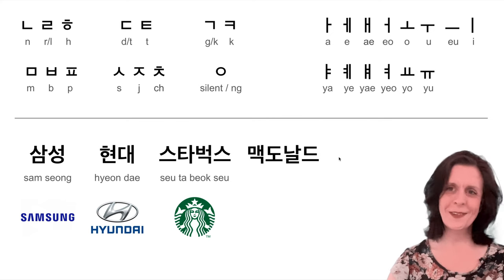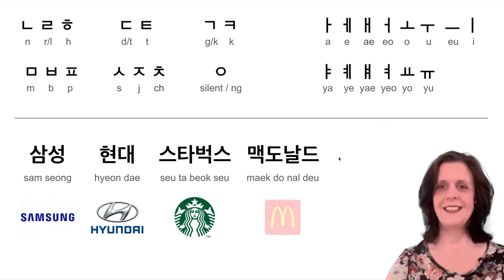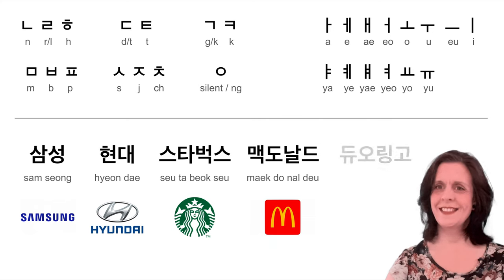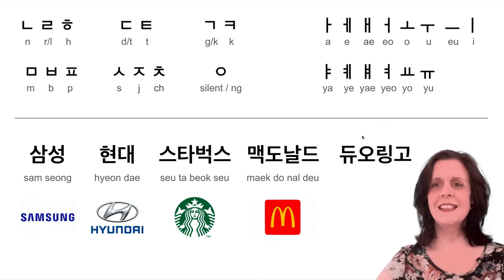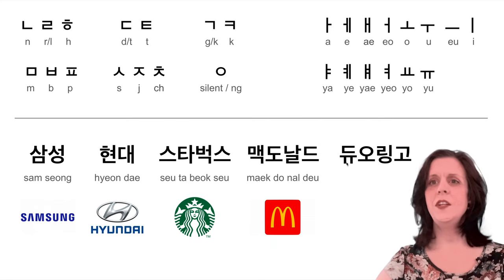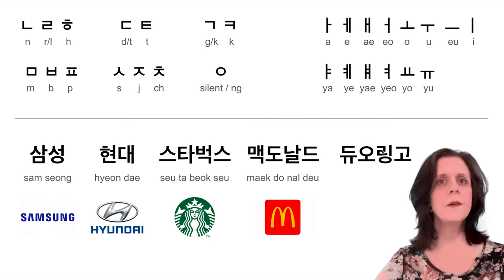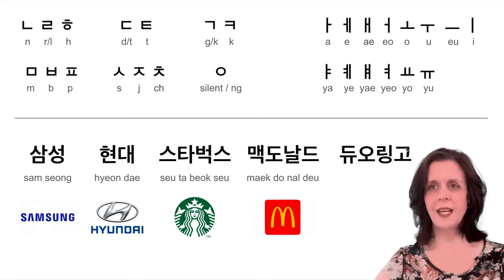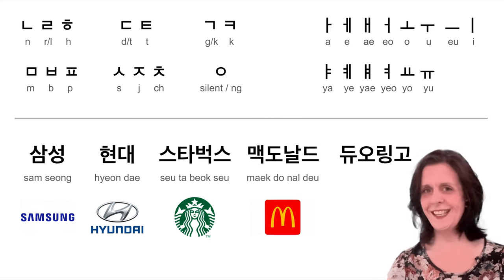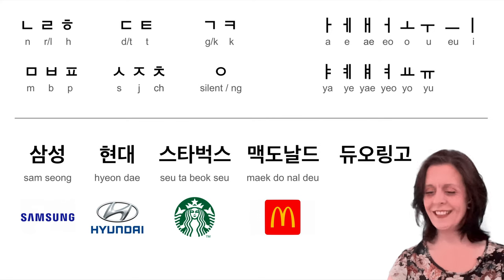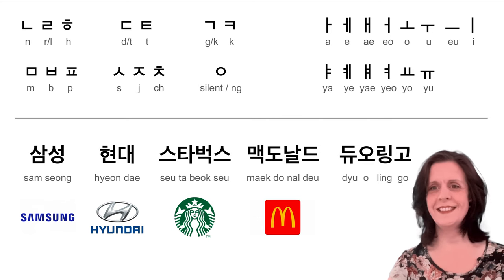You might be able to guess by now. McDonald's. And then D, U — this is the U sound — silent holder for an O, then L, I, N, G, O. So it is Duolingo. It is literally Duolingo in Korean.